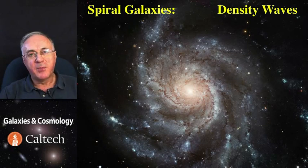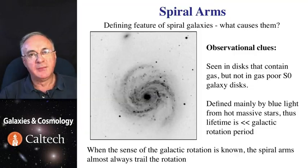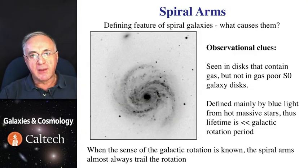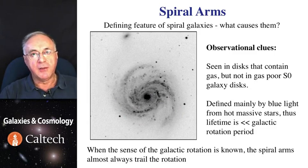Finally, let us now see why spiral galaxies are spiral. Obviously, the spiral arms are the defining feature, and there are some important observational facts about them.